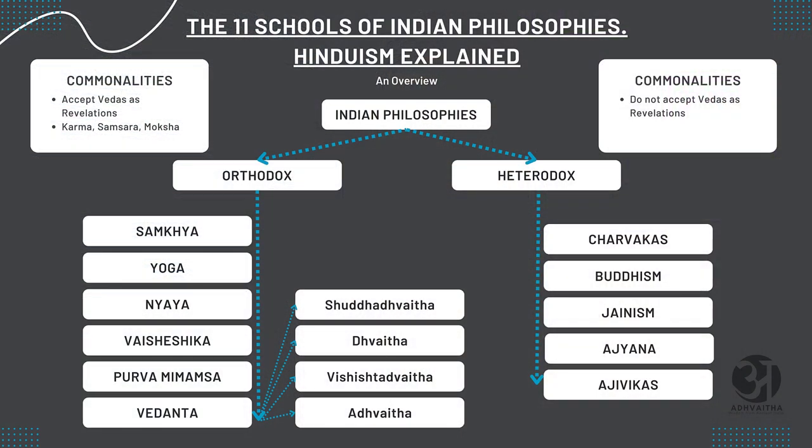There are 11 Indian philosophies in total, and to understand them we need to categorize them into two parts. One is Orthodox Indian philosophies and the other is heterodox Indian philosophies. Within Orthodox philosophies there are six, and within heterodox there are five. The Orthodox schools accept Vedic teachings and Vedas as a basis, while the heterodox schools do not accept Vedas as true or as a revelation.